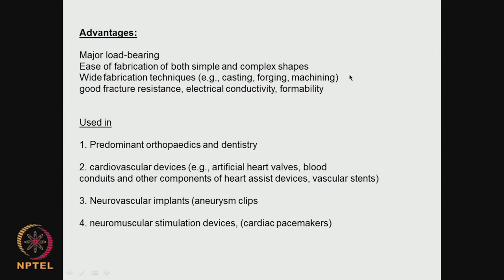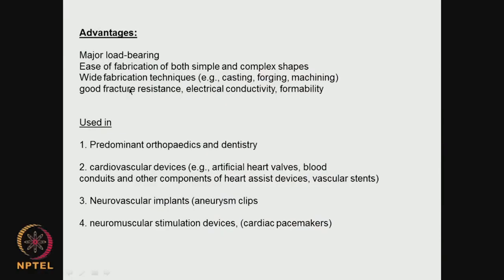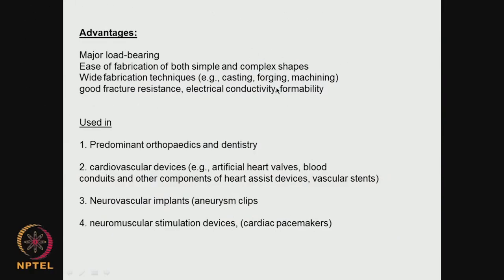We do not have such techniques for polymers or non-metals like ceramics — of course, polymers have some fabrication techniques, but nothing to beat metals. Good fracture resistance — suppose a crack develops, that does not mean the material will completely break; it takes some time. Whereas if you take a ceramic, as soon as a crack develops it may break very fast — fracture resistance is very poor. If you take a polymer, that also has poor fracture resistance. But if you take a metal, even with cracks, propagation is slower. Metals also have very good electrical conductivity, useful in biosensors and lead wires. Formability — we can make it in any form.